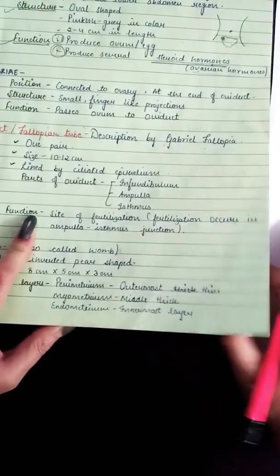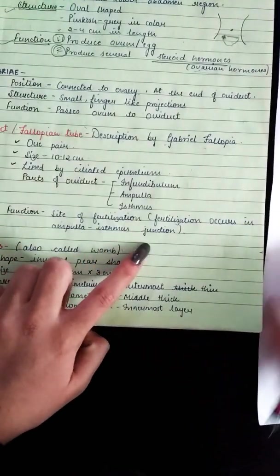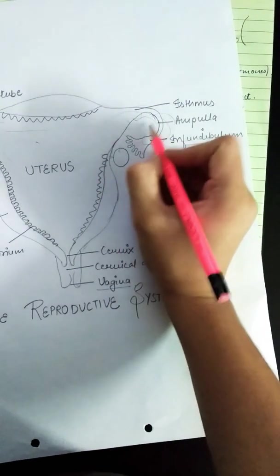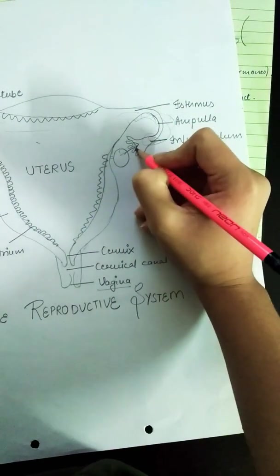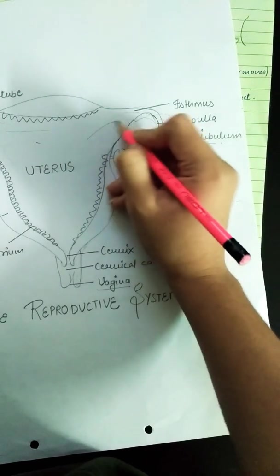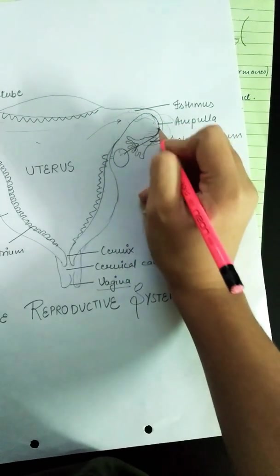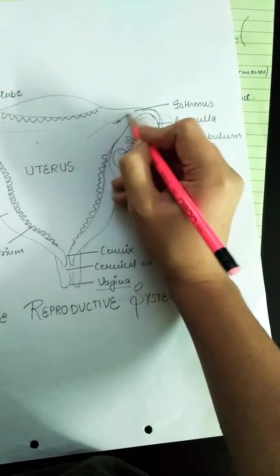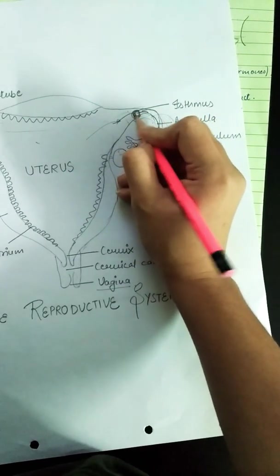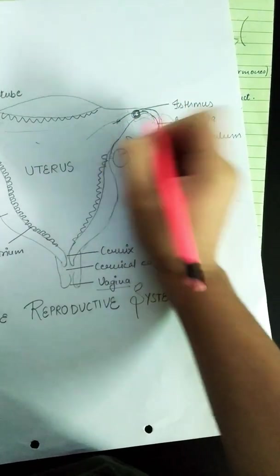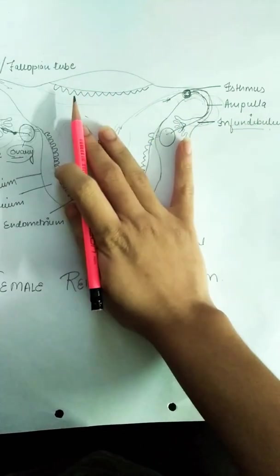The function of the oviduct: the site of fertilization is in the ampulla, at the ampullary-isthmic junction. This is where the sperm and egg meet, fertilization occurs, and a zygote is formed. Further developmental processes follow.